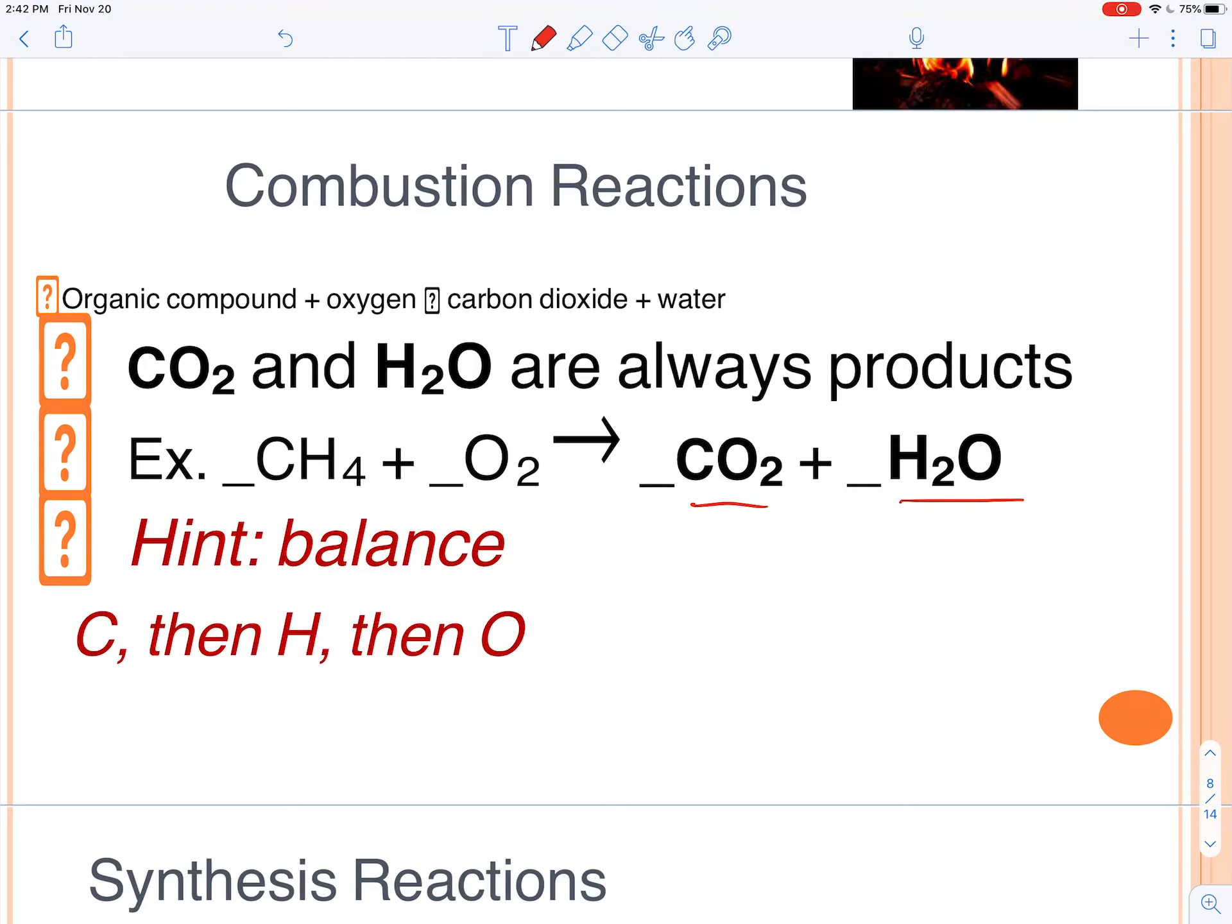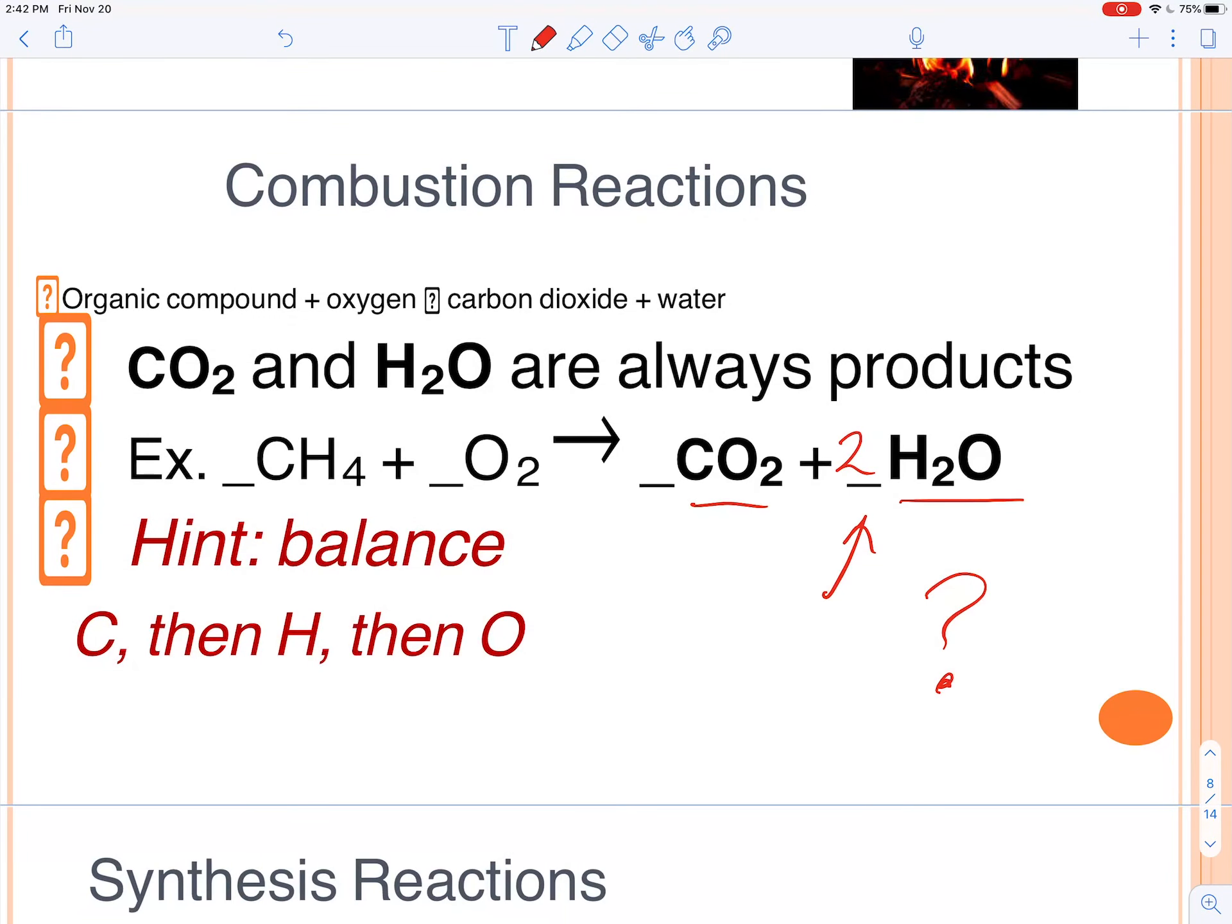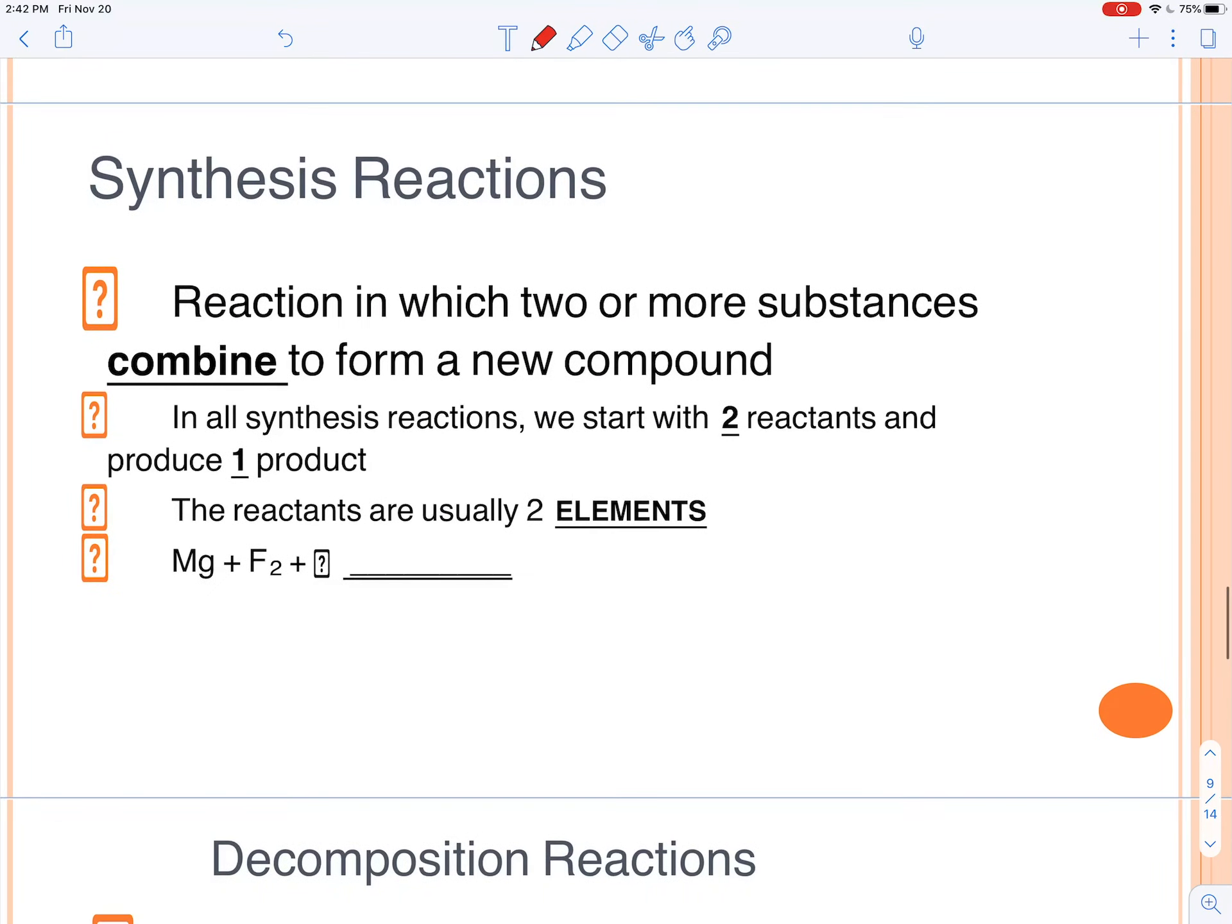To balance this, you want to balance the carbons first, which are balanced. What number should go here? Well, since we've got four on the left side, four hydrogens, I'm going to put a two here. That'll give me four hydrogens on the right side. And then I want to balance the oxygens next. I've got four on the right side, I'm going to put a two here as well. That's how you balance this equation. That's the combustion of methane.